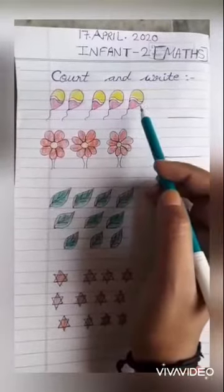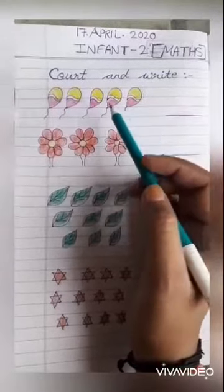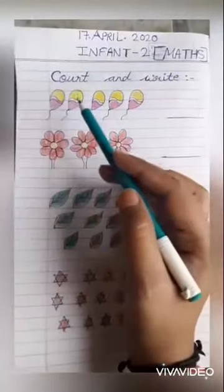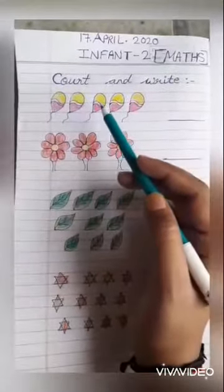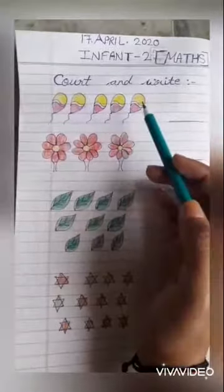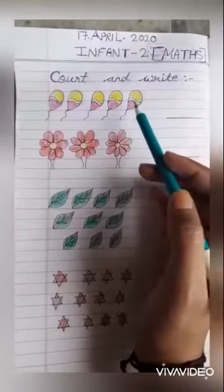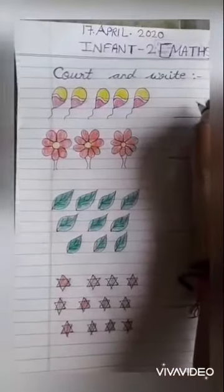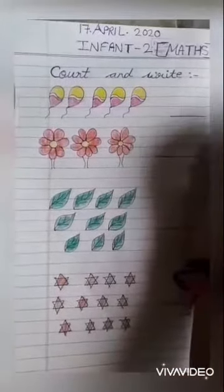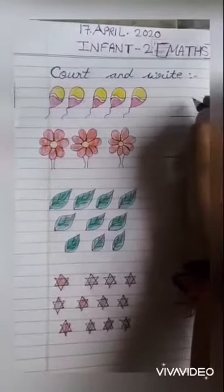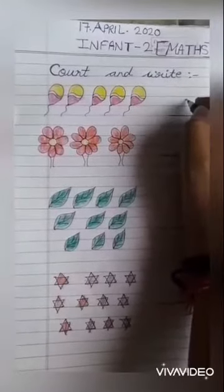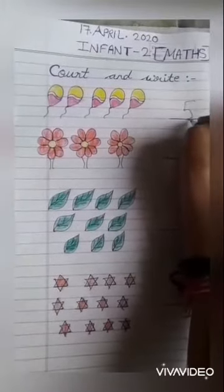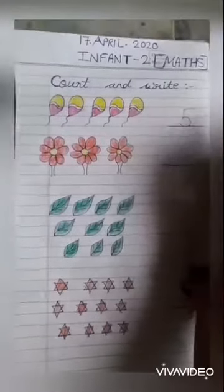We have counted how many balloons are there: 1, 2, 3, 4, 5. Then we will write how many balloons are there. We will write 5.